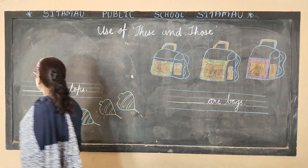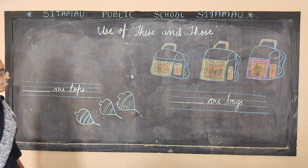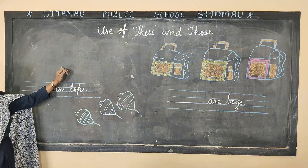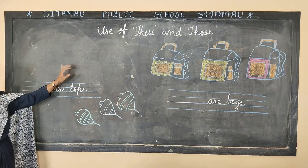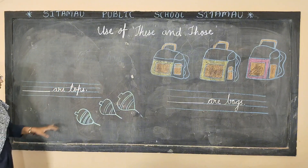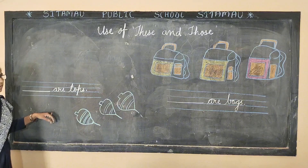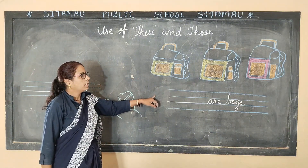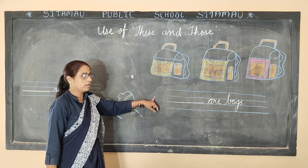We use 'these' when the object is near, and 'that' is used when the object is far. Like that, 'these' is used when things and persons are near to us, but their quantity is more than one. And 'those' we will use when the quantity of things is more than one.